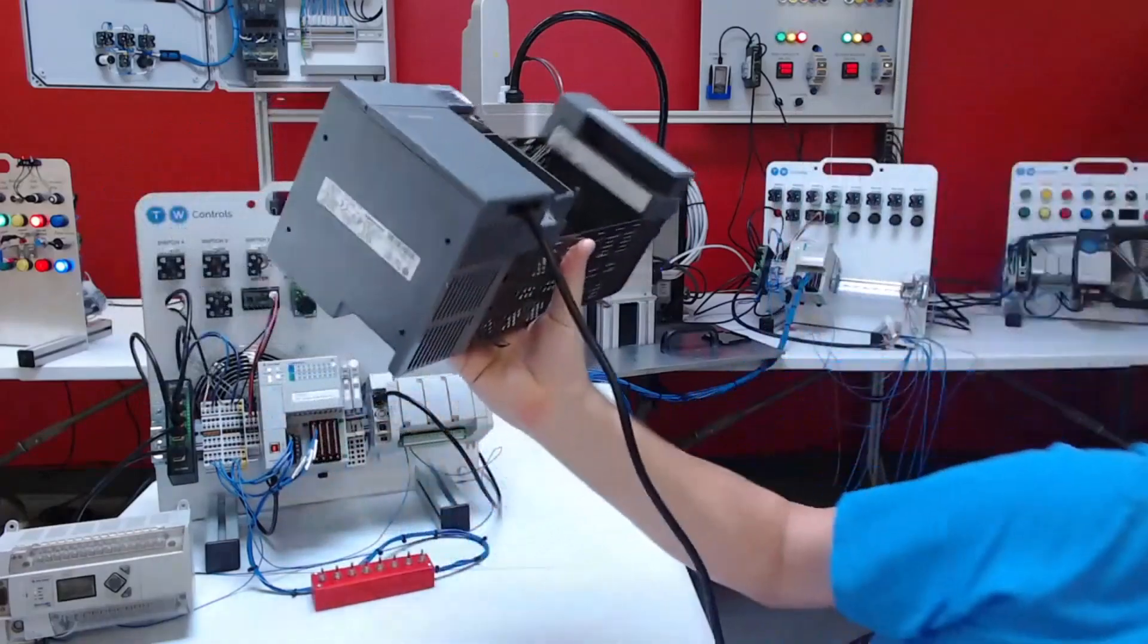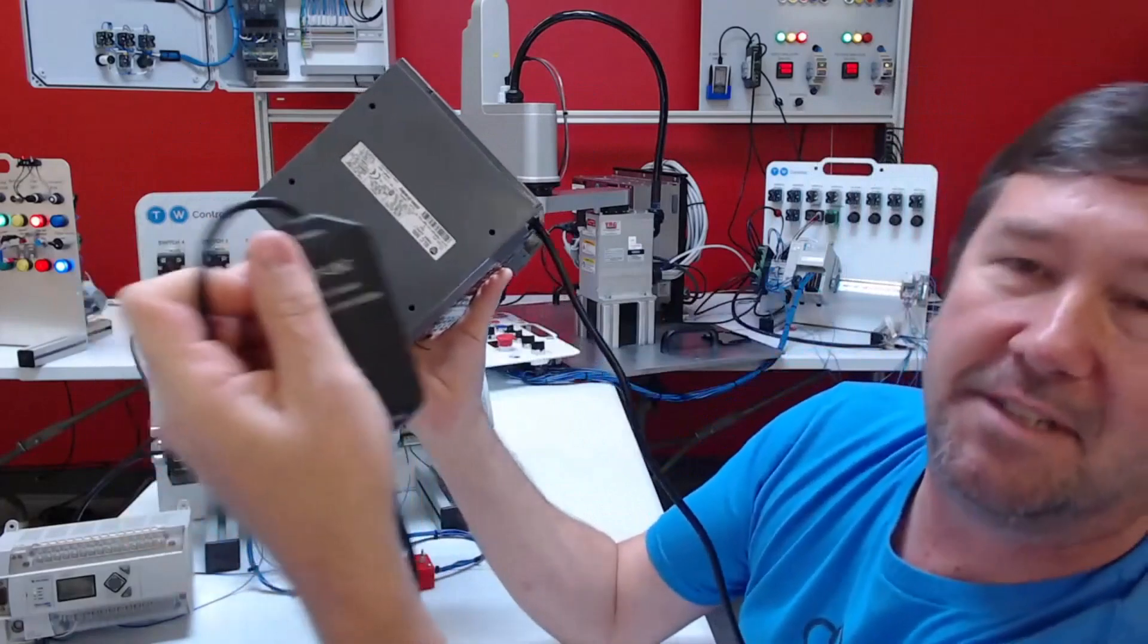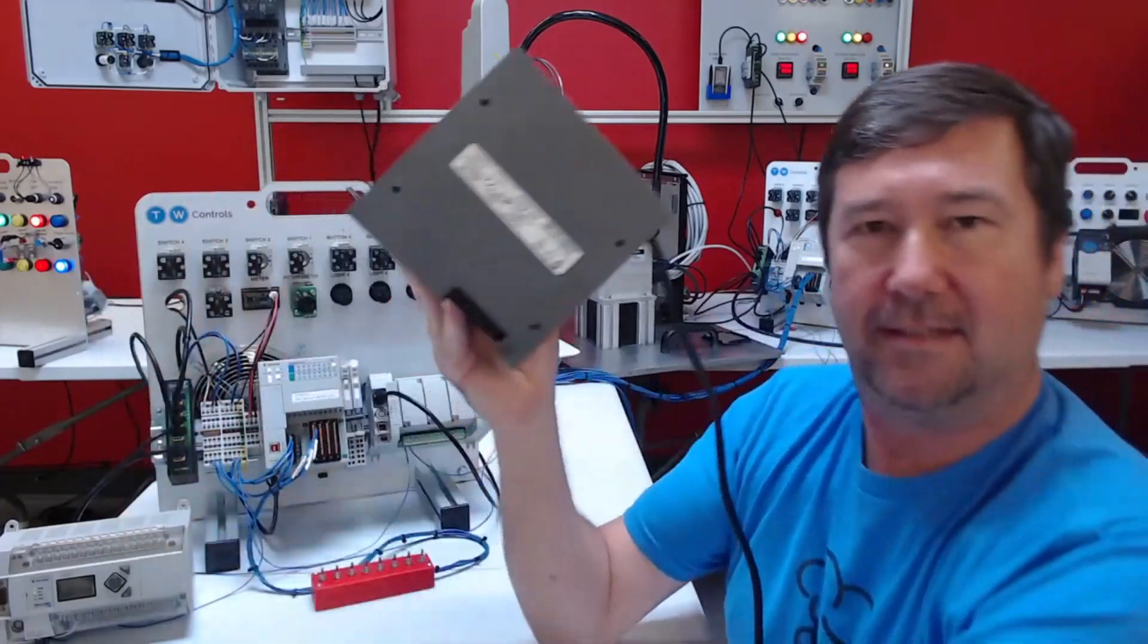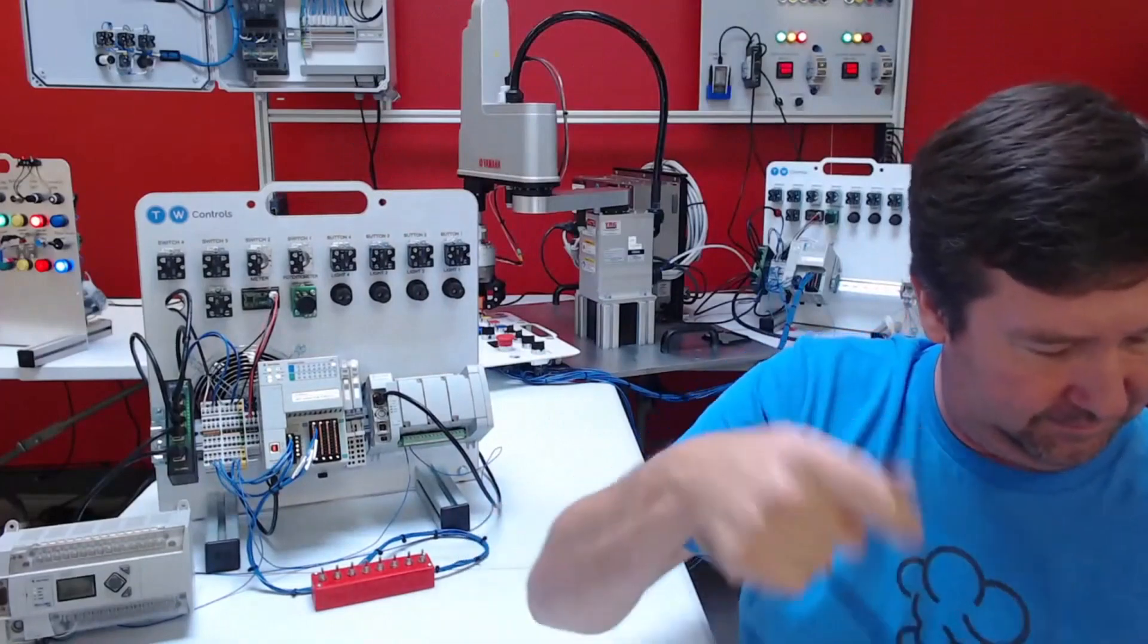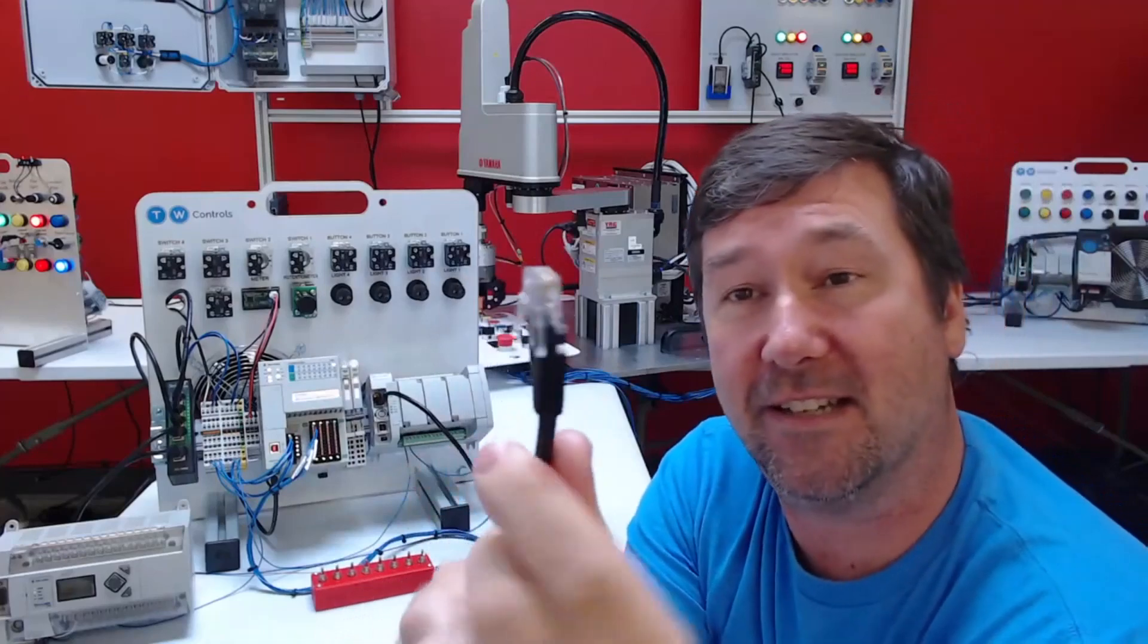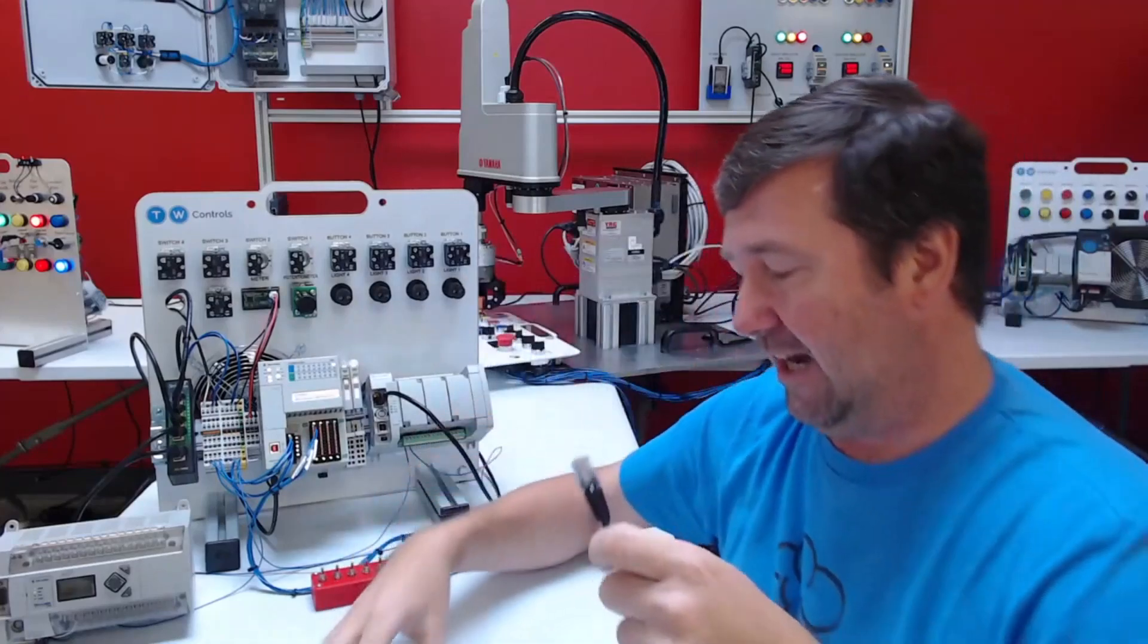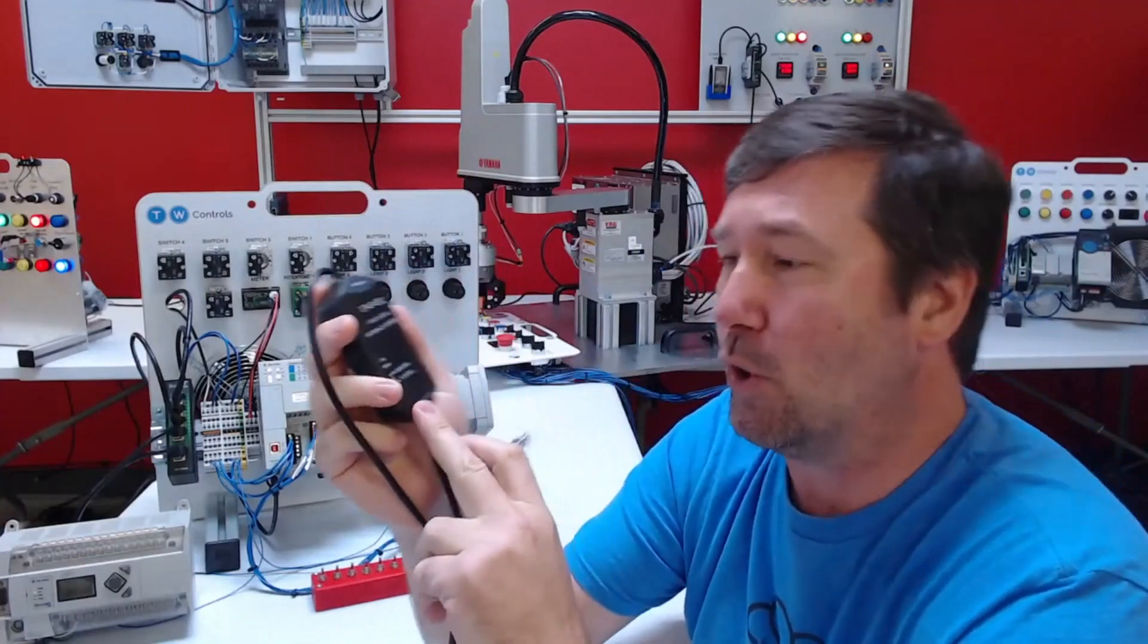For the top port we would use this 1747-UIC. Too many hands so I'm going to get this out of my hand. But it has a connector on it that looks just like ethernet but it's not. And this is not just a connector, this is actually a protocol converter also.